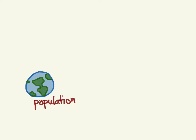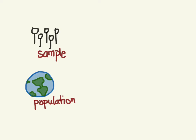In inferential statistics, we are trying to make determinations about characteristics of a population. But there's no way we can get information on everybody in a population, so we just get a representative sample. And based on the sample, we make our best estimate of the population. The first place we often encounter a confidence interval is during elections in poll data.